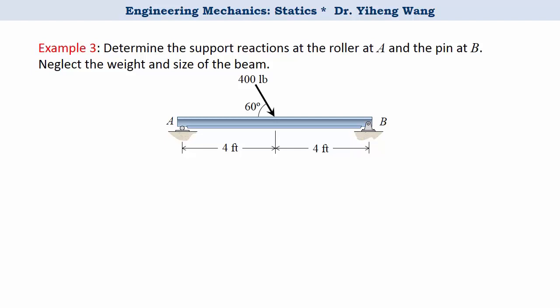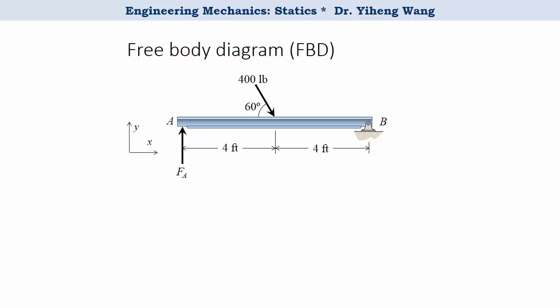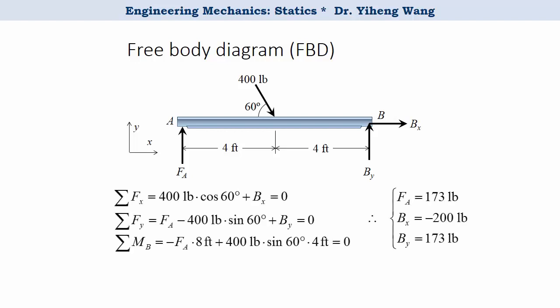Here's another example where we need to determine the support reactions at the roller and the pin. A roller is similar to a rocker or a simple contact support, and it exerts a force perpendicular to the contacting surface. A pin support allows rotation but prevents motion in both the horizontal and vertical directions. Therefore the support reactions are two forces along these two directions. We assume them to be in the drawn directions. With three unknowns, we write the three equilibrium equations to solve for them. Note that a negative force indicates the direction is opposite to what was originally assumed.